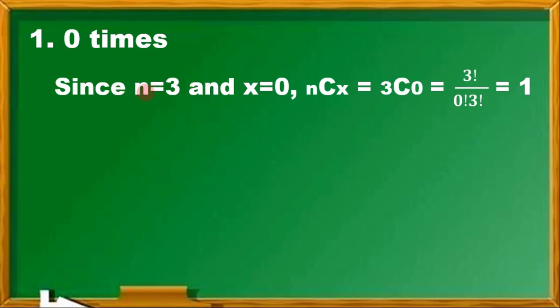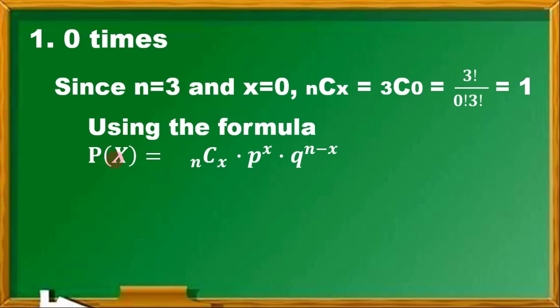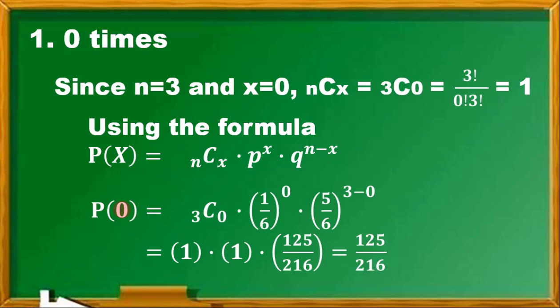For number 1, we have N is 3 and X is 0, so we are to get 3C0. Applying the combination formula, we have 3 factorial over 0 factorial times 3 factorial. Take note, 0 factorial equals 1. And then 3 factorial in the numerator divided by 3 factorial in the denominator gives us 1. Using the formula P(X), we find P(0). So 3C0 equals 1, times P which is 1/6 raised to X equals 0, times Q which is 5/6 raised to 3 minus 0.